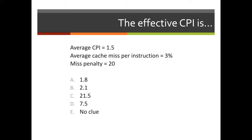Let's consider an example where we calculate effective CPI. We have an average CPI of 1.5, an average cache miss per instruction of 3%, and a miss penalty of 20 cycles. Using our formula: 1.5 plus (3% × 20) = 1.5 plus 0.6, giving us an effective CPI of 2.1.